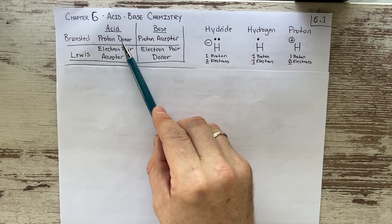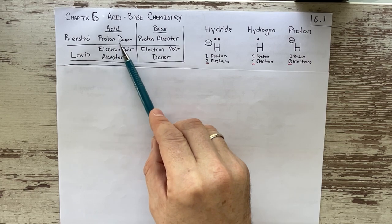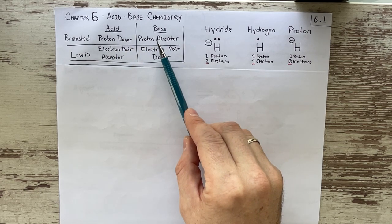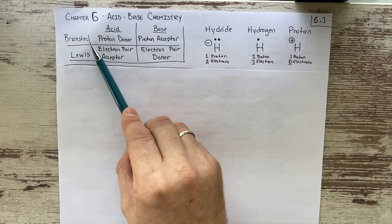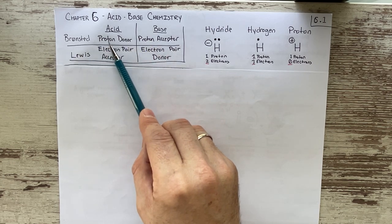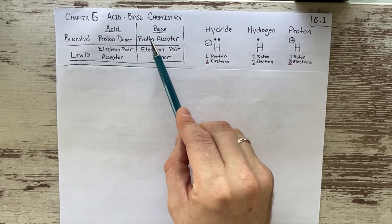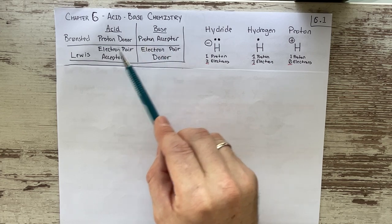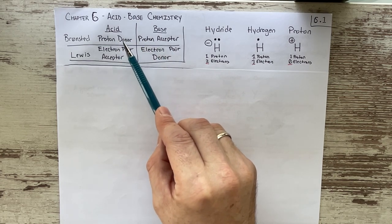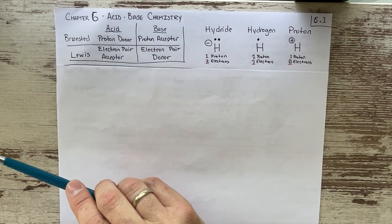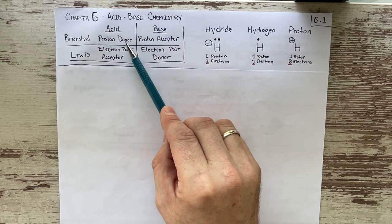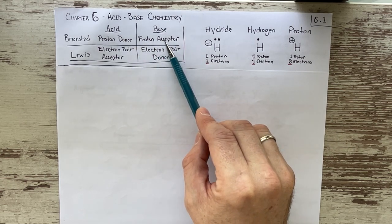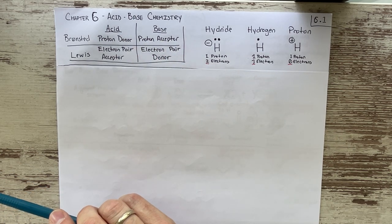The Bronsted acid we define as a proton donor, and the Bronsted base we define as a proton acceptor. From the Bronsted definition, we're focusing on the proton that is being transferred from one molecule to another — the acid being the molecule that's donating, and the base being the molecule that's accepting.